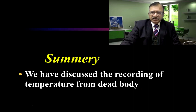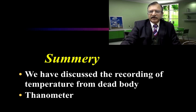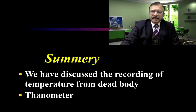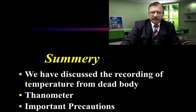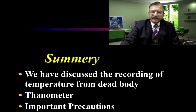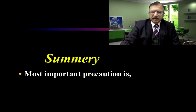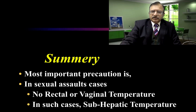In summary, today's lecture discussed the recording of temperature from the dead body using a thanometer — a special thermometer calibrated from 0 to 50 degrees — recorded from the rectum or vagina. We also discussed the important precaution that if there is an allegation of sexual assault or sexual interference, recording from the vagina or rectum should not be made and sub-hepatic recording should be done instead. This is important in sexual assault cases.